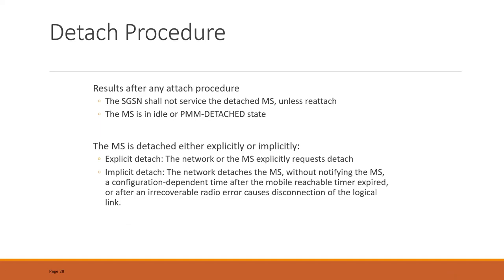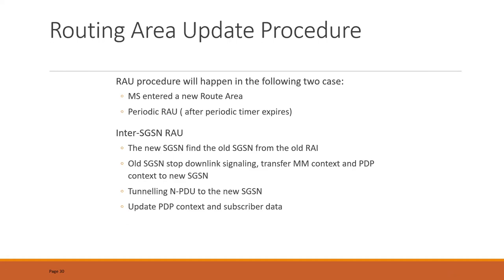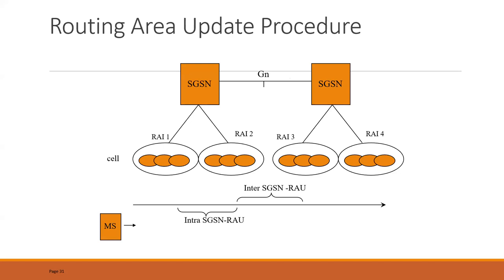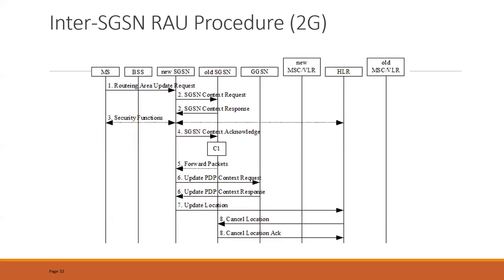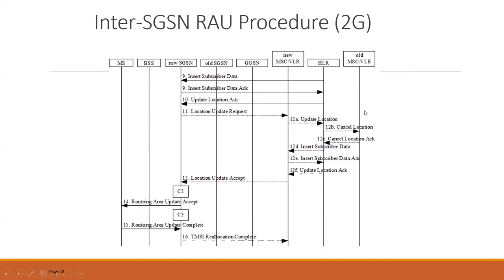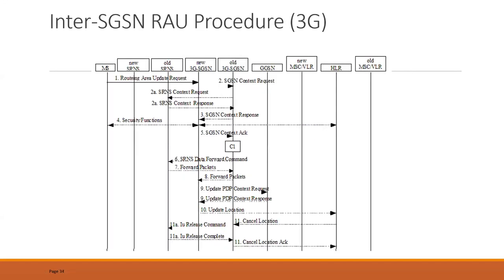Next we saw the difference between explicit and implicit detach. Then we moved on to routing area update — the difference between periodic routing area update and a normal routing area update. There are two types: inter-SGSN and intra-SGSN. We discussed how inter-SGSN works and how intra-SGSN works. If it's the same routing area within the same SGSN it's called intra-SGSN; if it's a different SGSN it's called inter-SGSN. We took a look at the 2G intra-SGSN procedure and how DNS is involved in that flow.